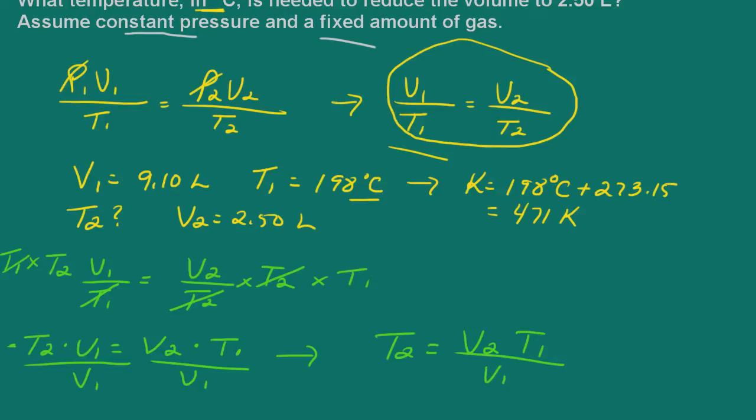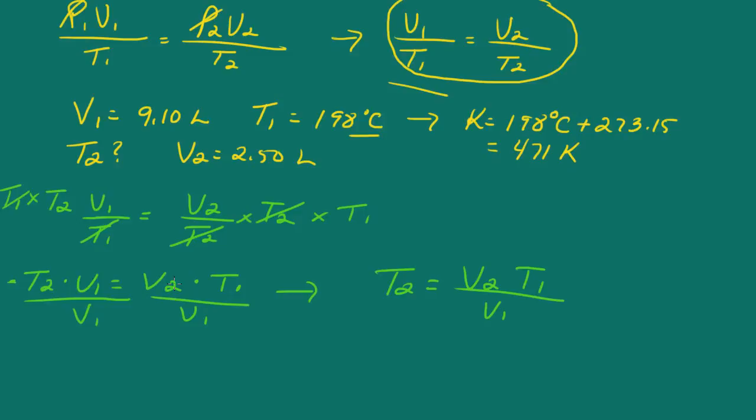So now all we have to do is plug in the values. So T2 is equal to V2 is 2.5 liters, and T1 is 471 Kelvin. And we're going to divide this by V1, which is 9.1 liters. And notice that my units cancel here and I'm left in Kelvin. So we have 2.5 times 471 divided by 9.1, and that gives us 129 Kelvin.